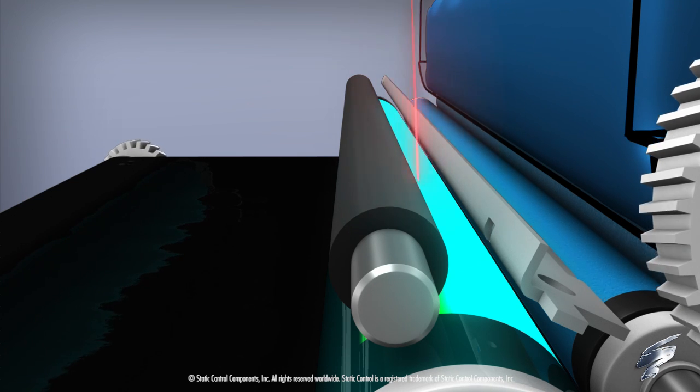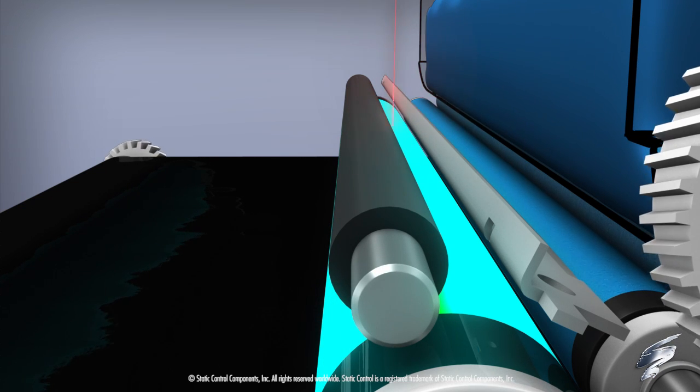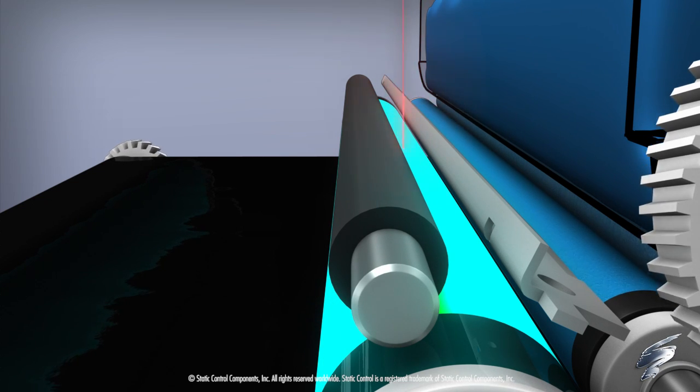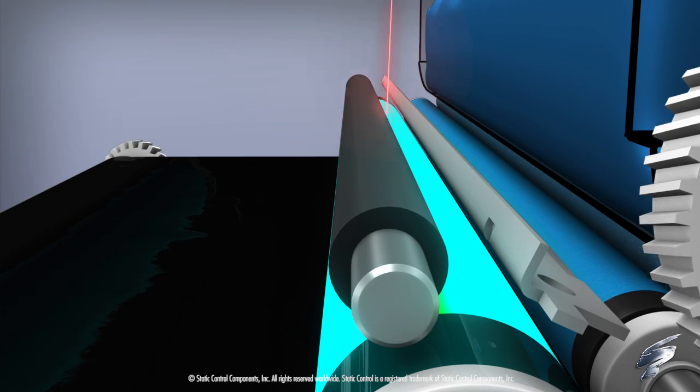The OPC drum is then exposed to a laser, which forms the image. This area is more positively charged than the areas not exposed to the laser.